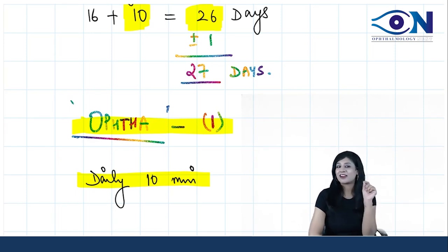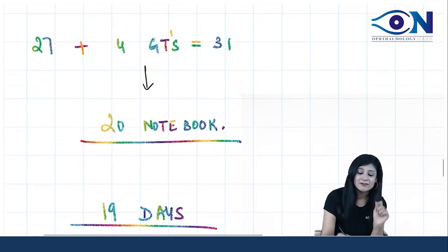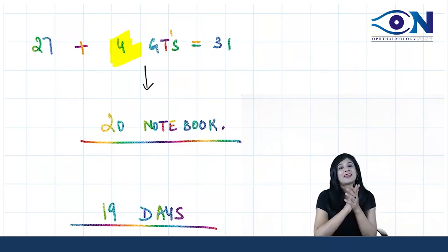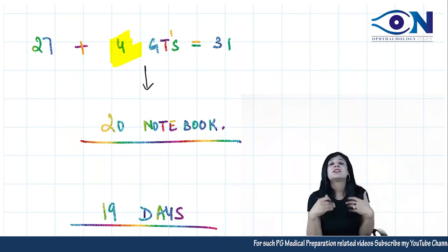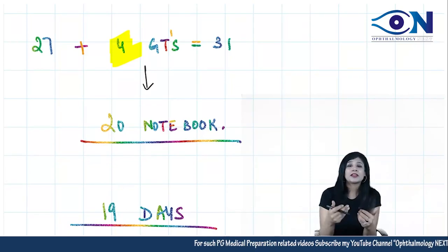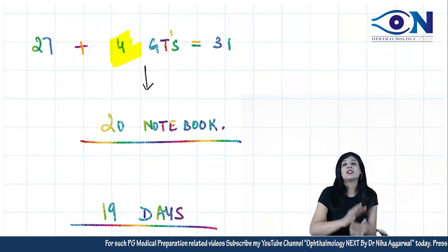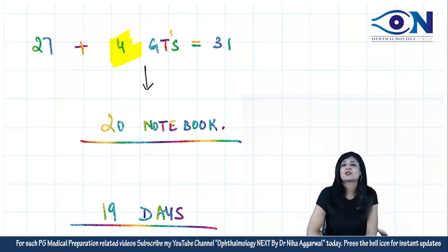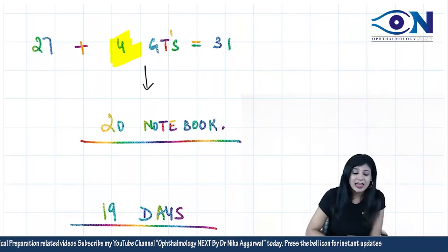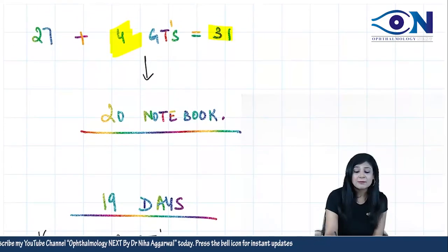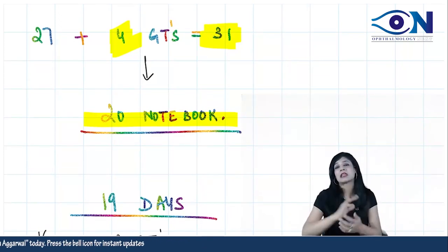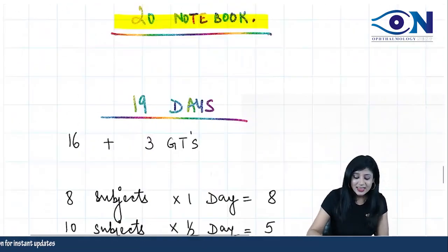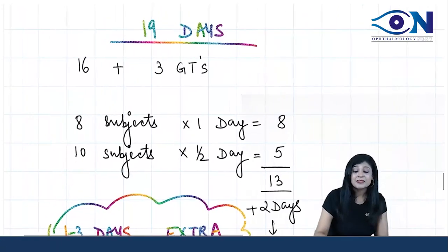We have got total of 27 days. We were having 31 days, so we have four good days for the grand test. If you do not want to give four grand tests, you can even attempt three grand tests, or if you require one day extra for any subject, you can reduce the number of grand tests from four to three. This 27 plus four together makes 31 days, and again we have added the most important things in our 20th notebook.